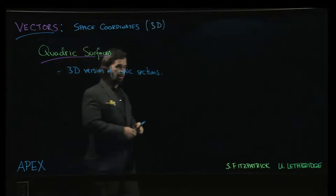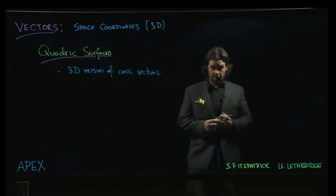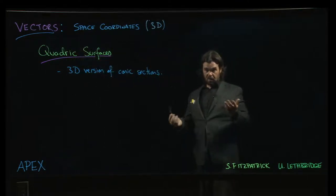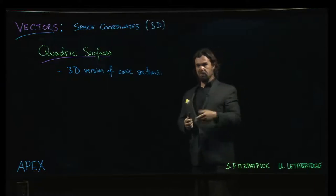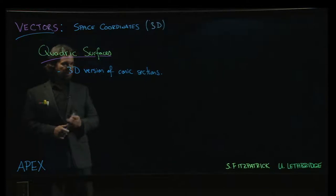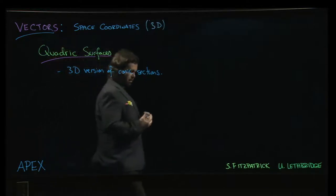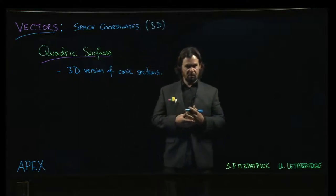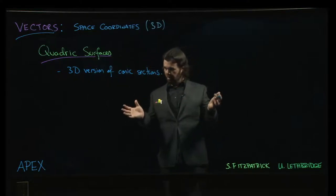As surfaces in three dimensions go, they are among the simpler options that we have. They will look complicated at first, but they're relatively simple. This is basically the 3D version of conic sections.